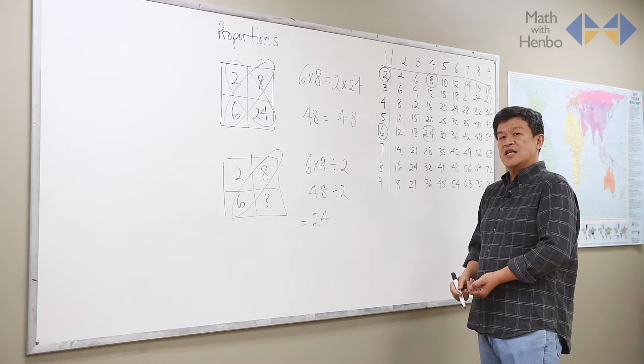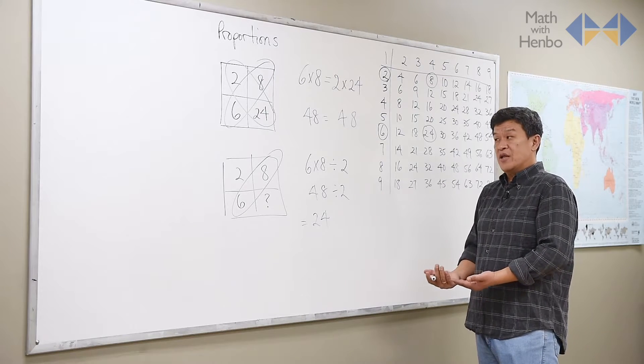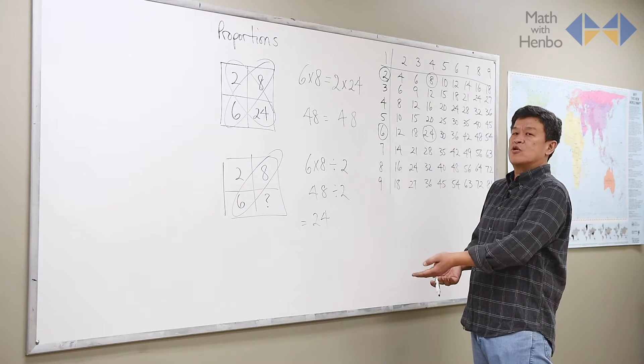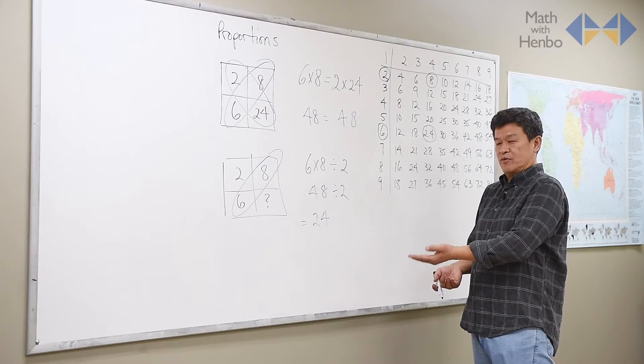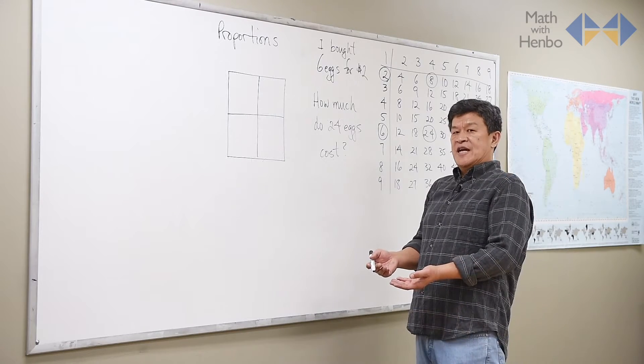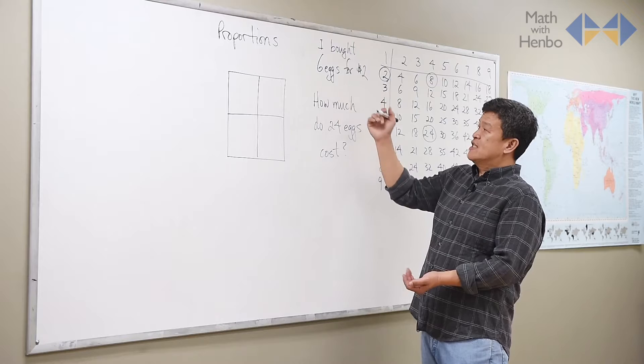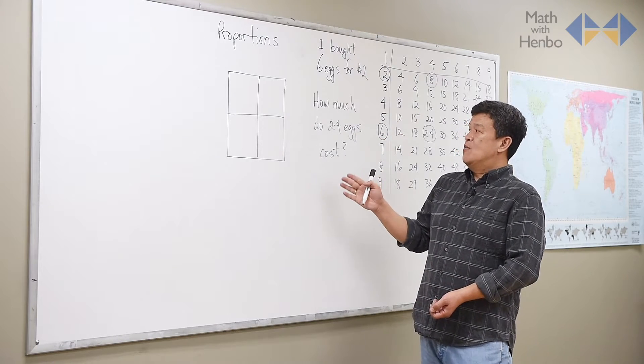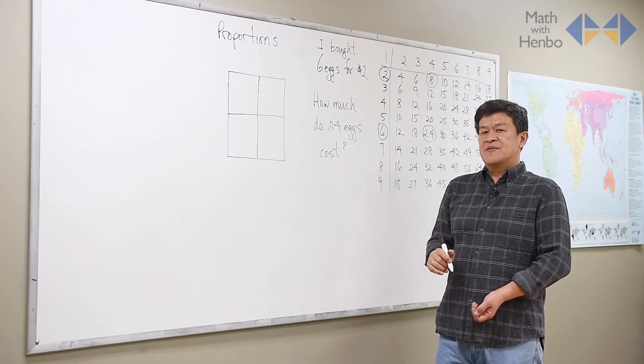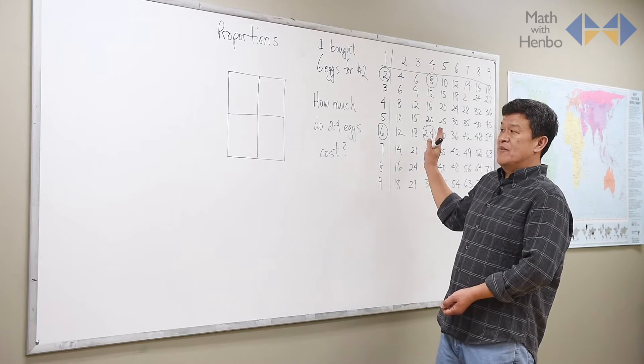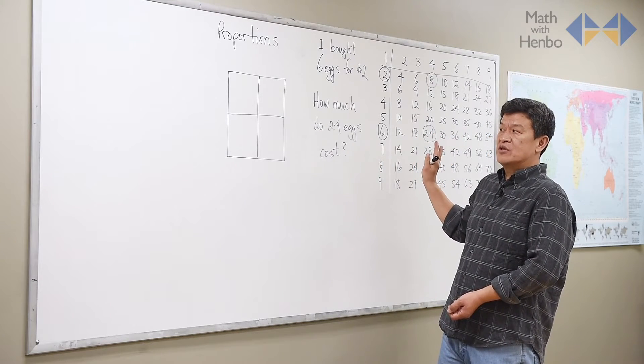And that's how we essentially take care of the method or trouble with proportions, or any question with proportions. To give you an example, let's say I bought 6 eggs for $2. How much would 24 eggs cost me? And using the proportional method, you should understand that it works for any numbers.